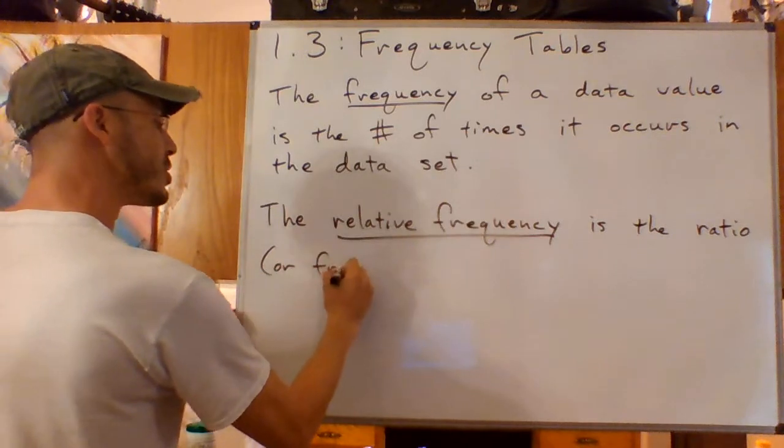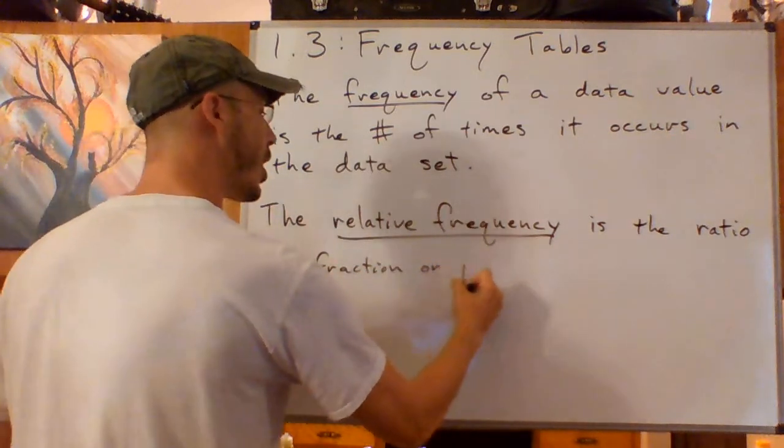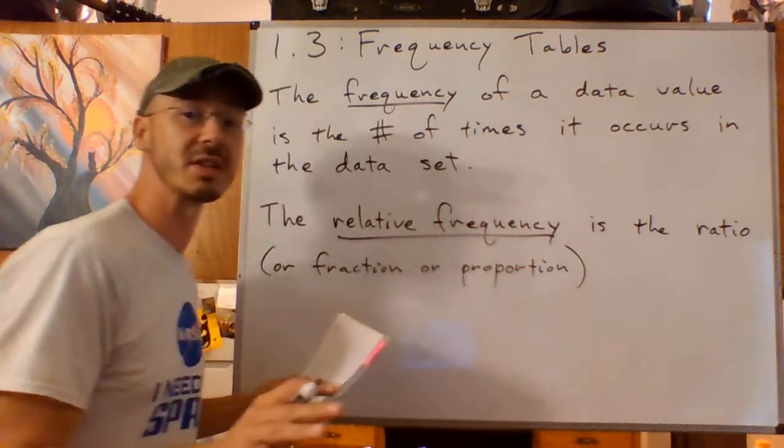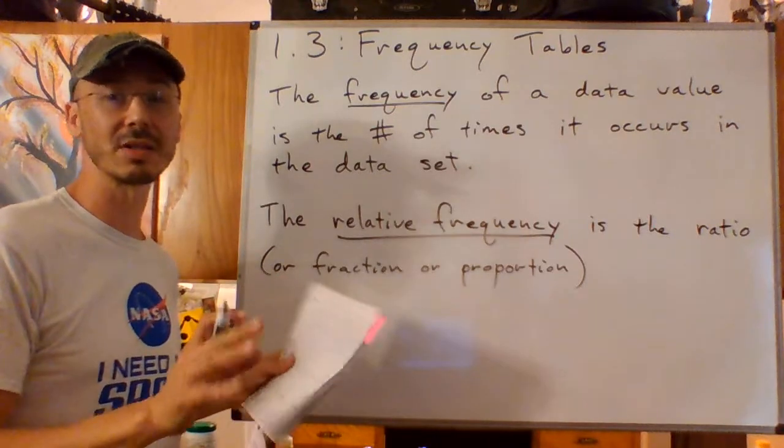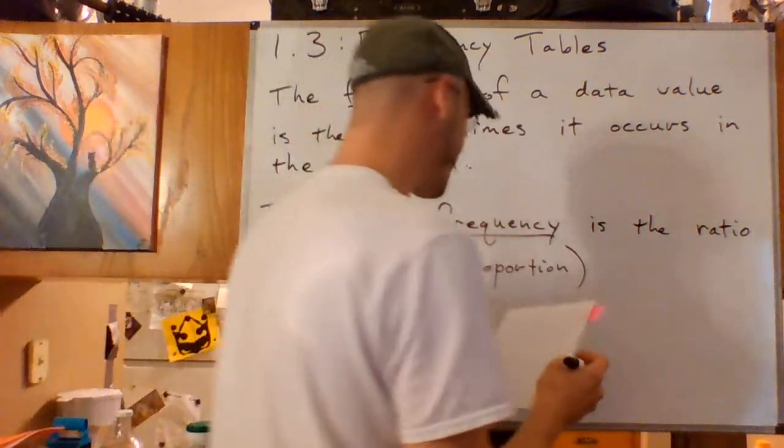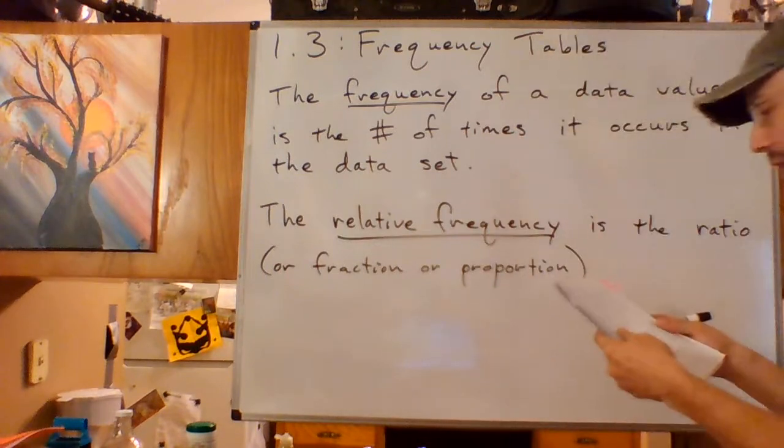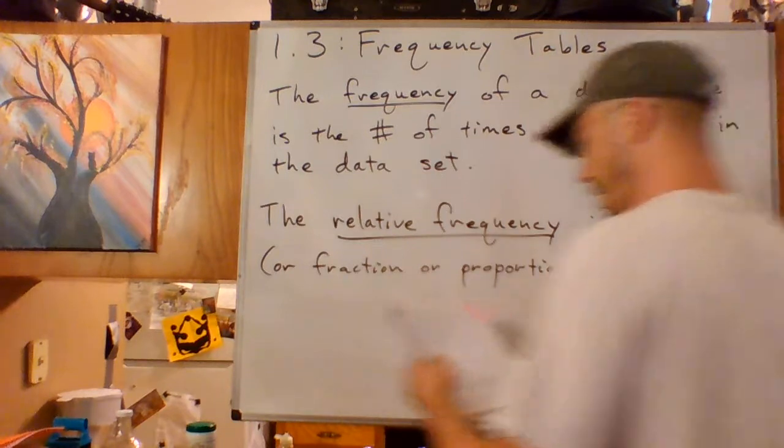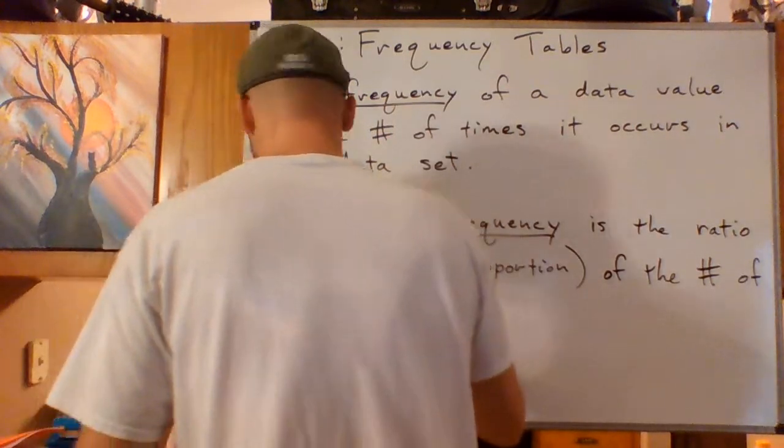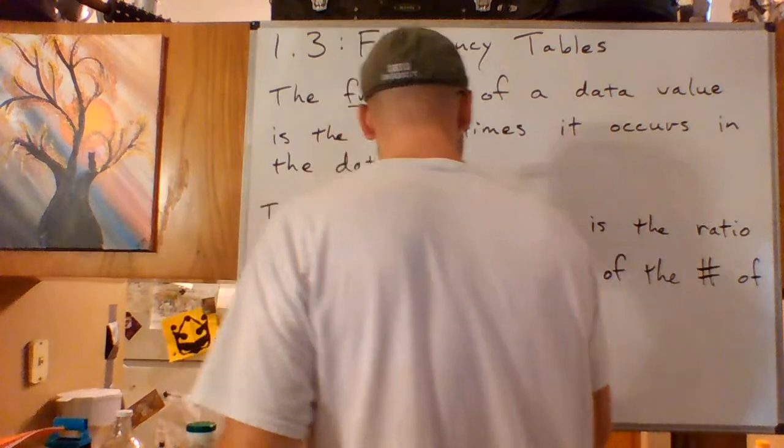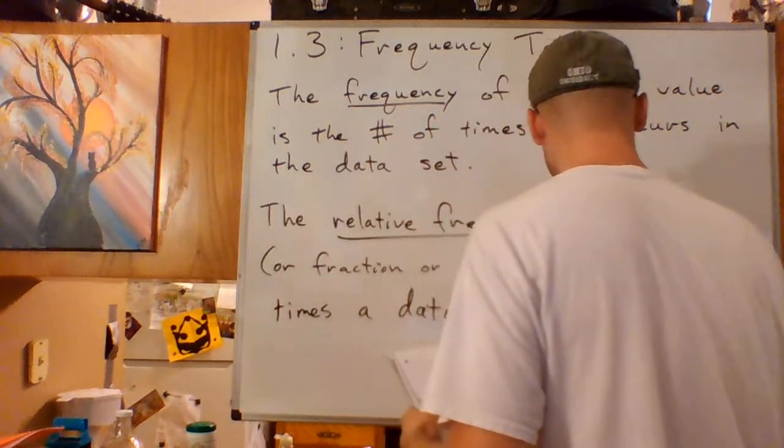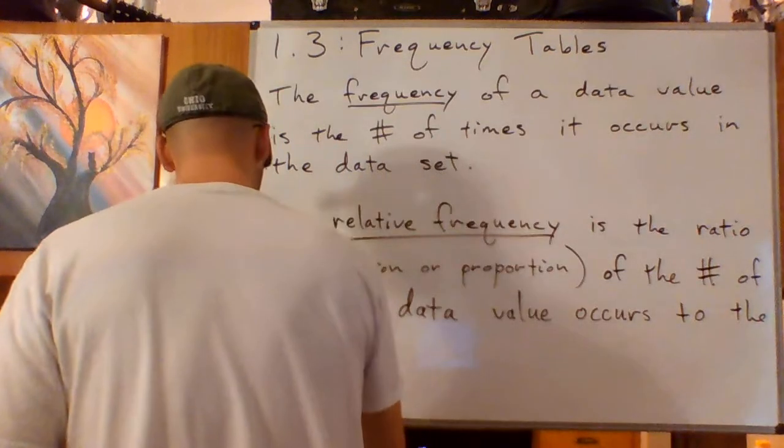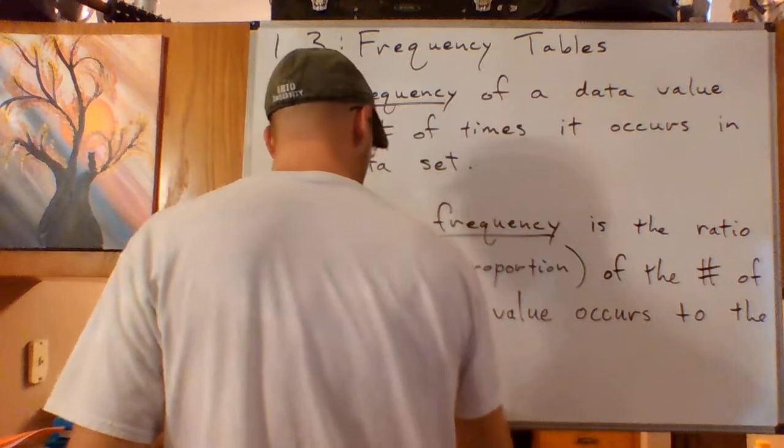The fraction or proportion, you can think of it as a percentage but I'm not going to use that because that looks like a different number. But the ratio or fraction or proportion are all exactly the same. Of the number of times a data value occurs to the total number of outcomes.